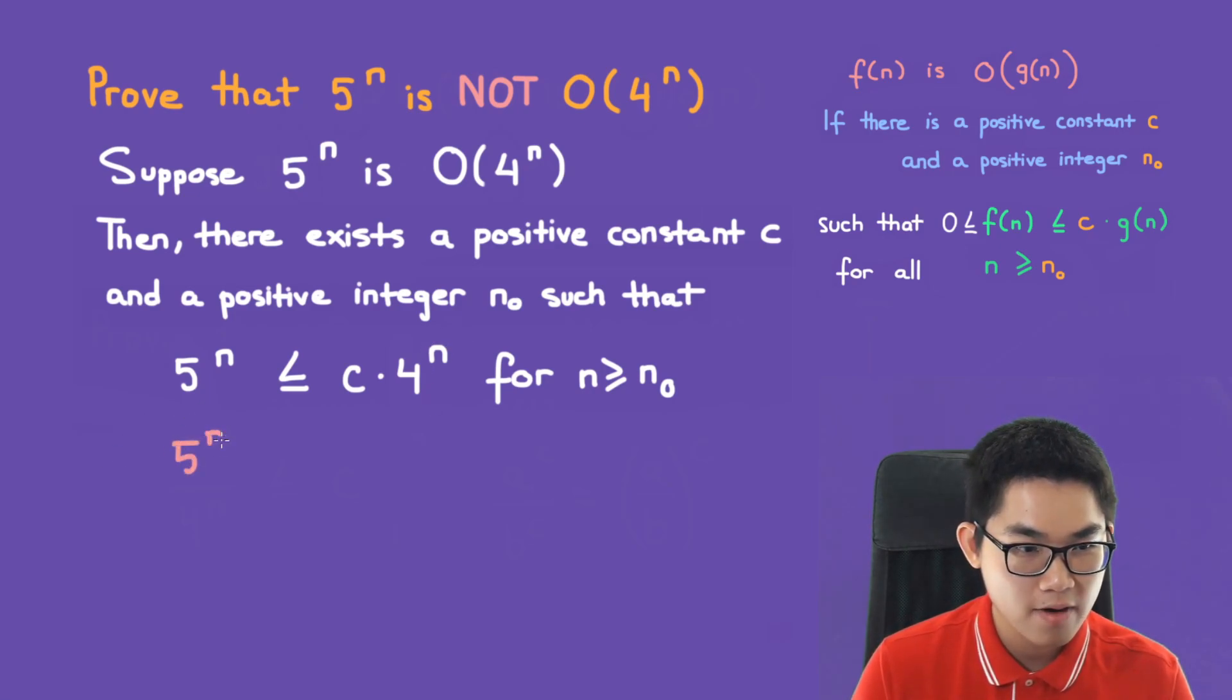We have 5^n divided by 4^n, and that's less than or equal to c times 4^n over 4^n, which is just 1.